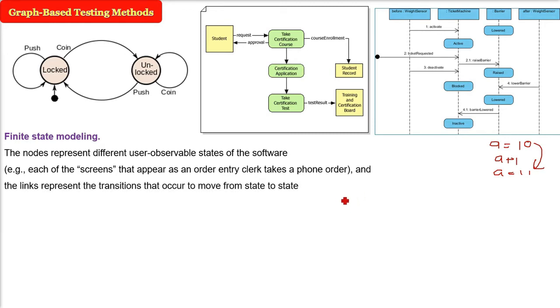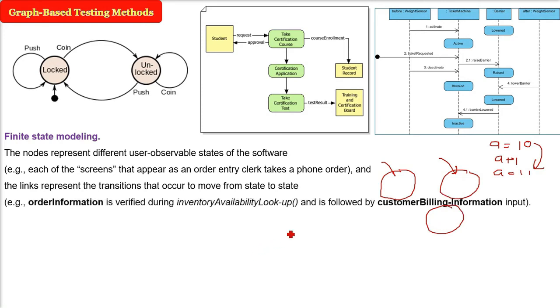And what are the links? They can represent the transition that occurred to move from one state to another. So what the link will show what is done so that the states are changed. And states are what? The observable behavior.